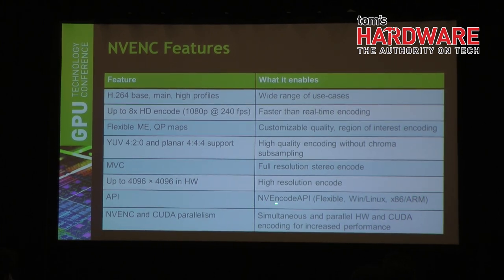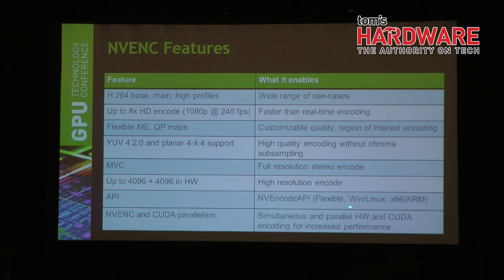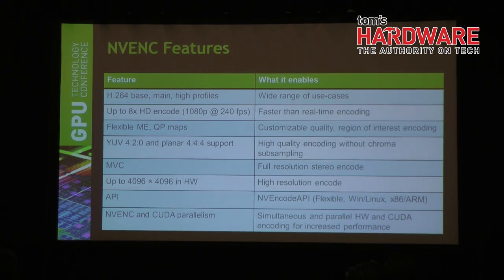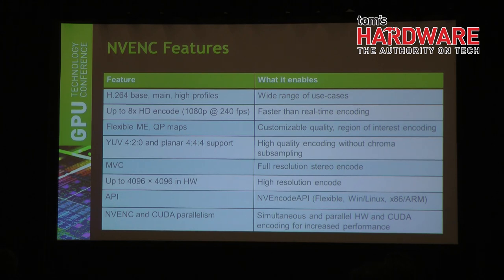The API is a proprietary NVENC API — a flexible API documented in the SDK, available on Windows and Linux. Currently available on x86 and x64 platforms. One key capability: NVENC and CUDA parallelism. You can run both the CUDA-based encoder and the NVENC hardware encoder simultaneously. If your graphics engine is idle, you can use both to increase channel density. They operate in completely different areas with no penalties.